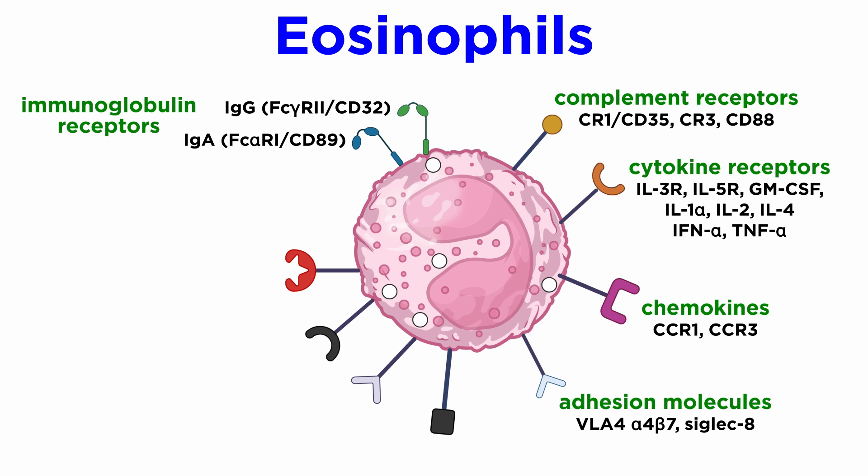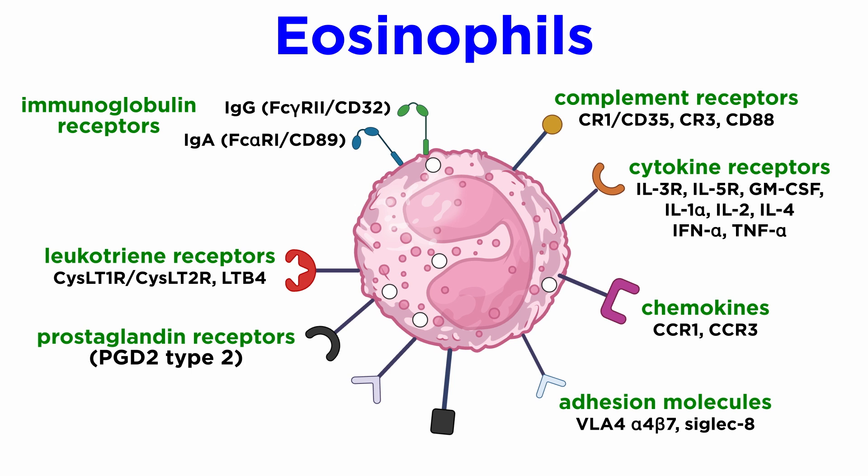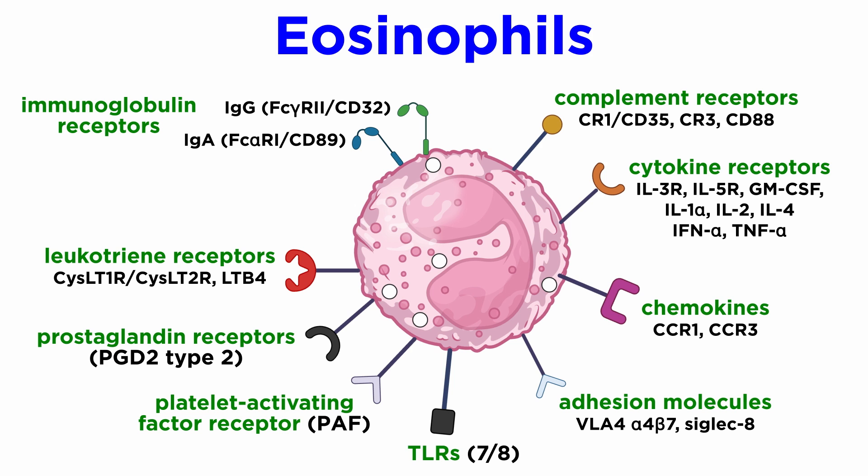Eosinophils also express adhesion molecules like the very late antigen-4 (VLA-4), α4β7, and Siglec-8; leukotriene receptors CysLT1R and CysLT2R, the LTB4 receptor; prostaglandin receptors like PGD2 type 2 receptor; platelet-activating factor receptor (PAF); and toll-like receptors, particularly TLR7 and TLR8.